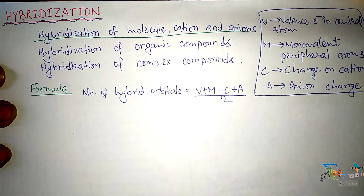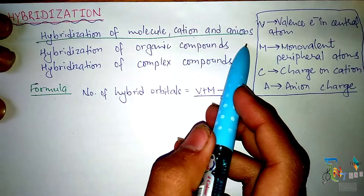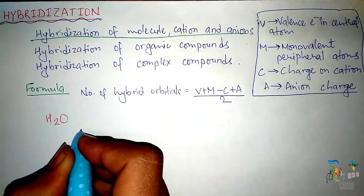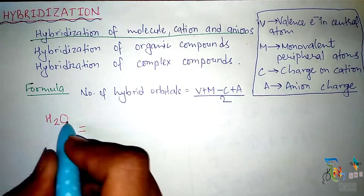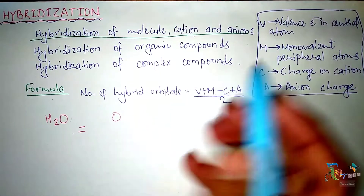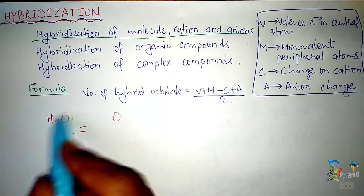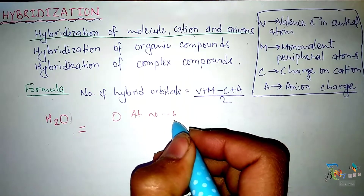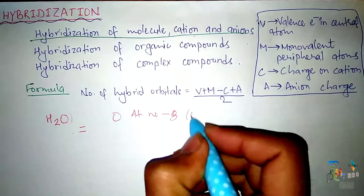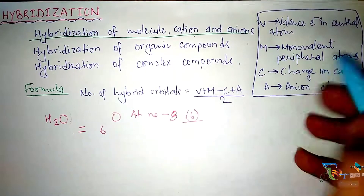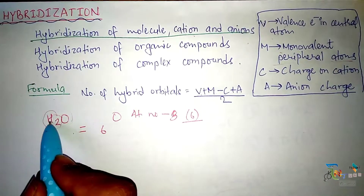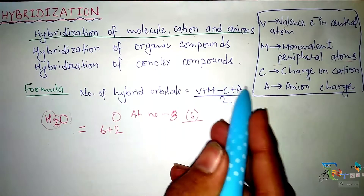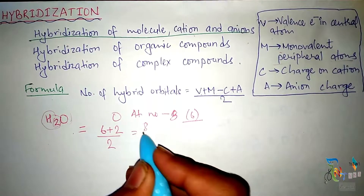Let's take H₂O (water) as an example for a molecule. Valence electrons of oxygen (central atom, atomic number 8) is 6. Monovalent peripheral atoms: H₂O has 2 hydrogen atoms, which are monovalent, so we add 2. No cation or anion charges. So the formula gives (6 + 2) / 2 = 8 / 2 = 4.